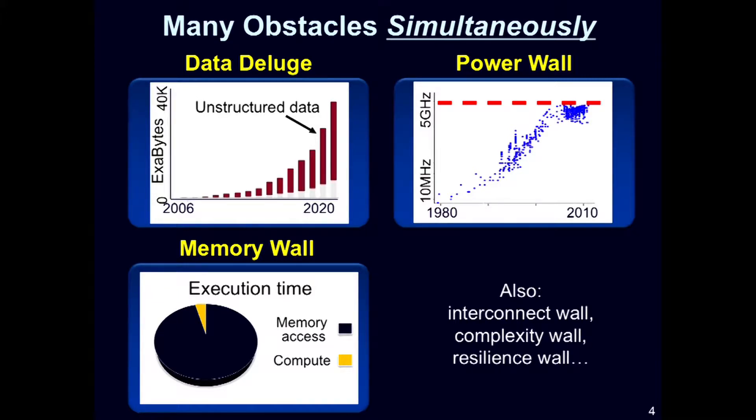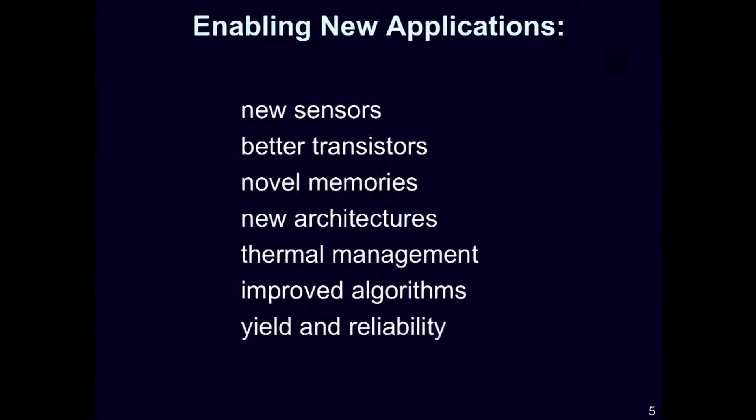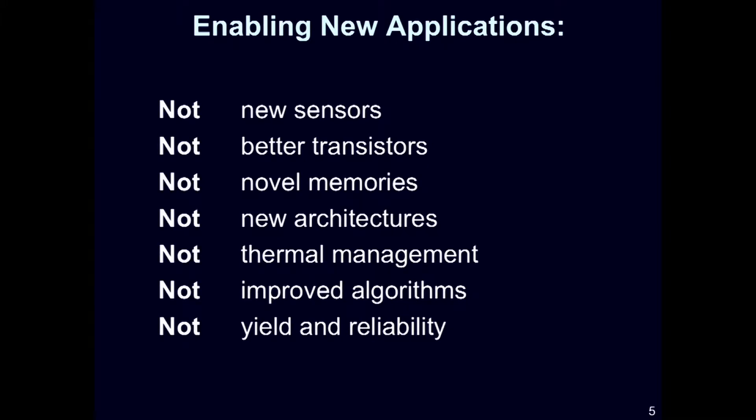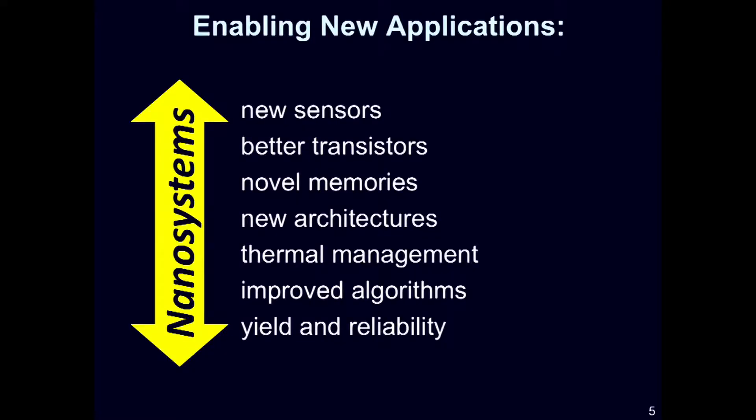And the list of walls goes on and on: the interconnect wall, complexity wall, resiliency wall, communication wall, and so on. So the question is, given all of these obstacles, how can we possibly enable these new, exciting applications? Does the answer lie in building a new sensor, maybe a new transistor, a new architecture, or maybe a new algorithm? Unfortunately not. It's clear that just focusing on one solution to solve one problem is not going to overcome all of these walls. Rather, we have to have coordinated advances across the entire system stack — in a word, build nanosystems — in order to enable these new applications.